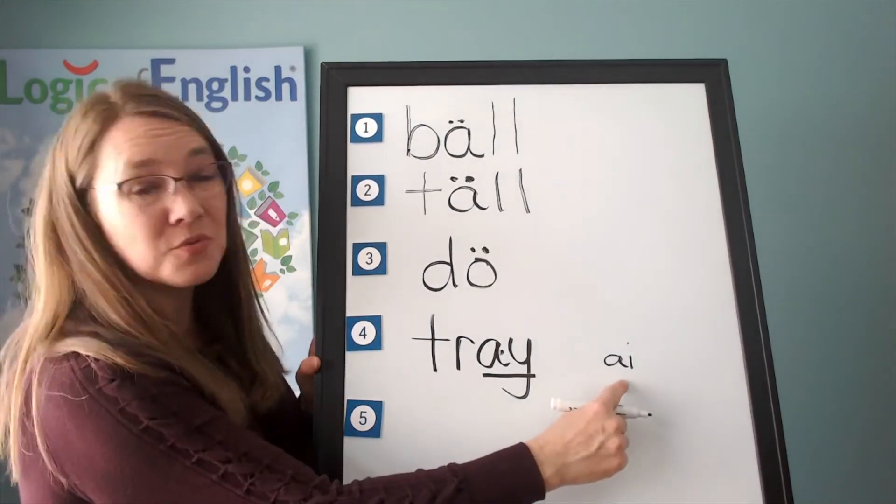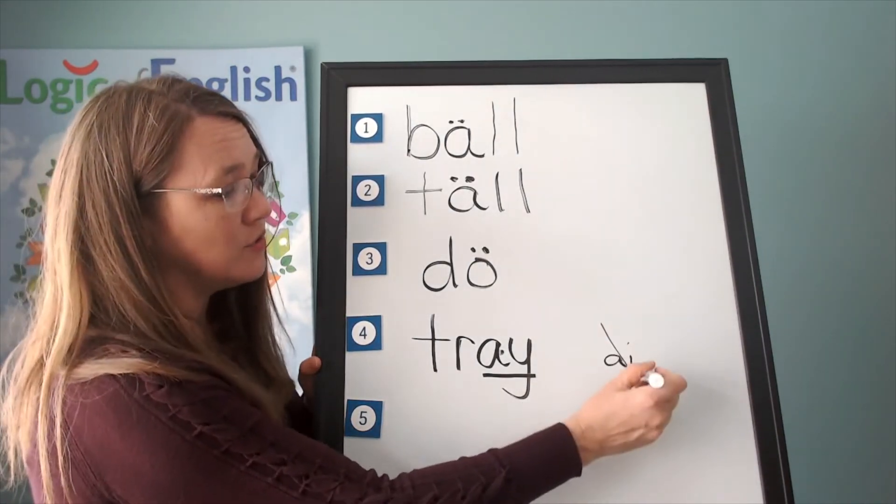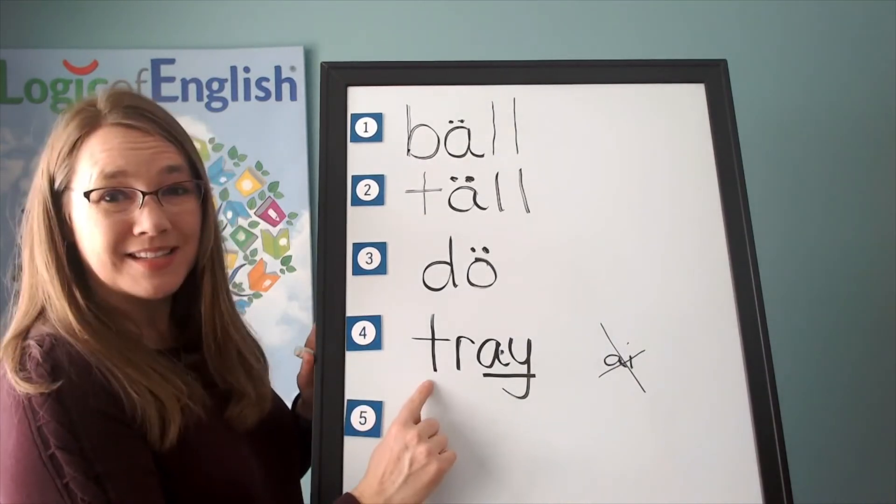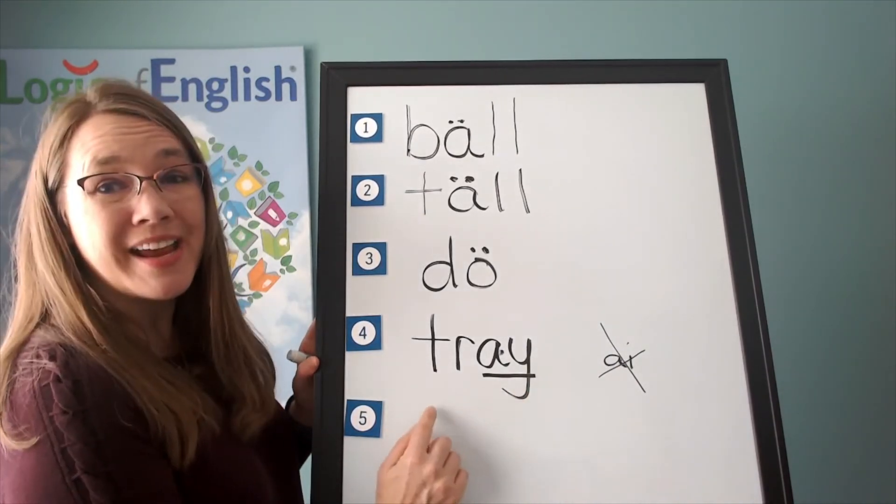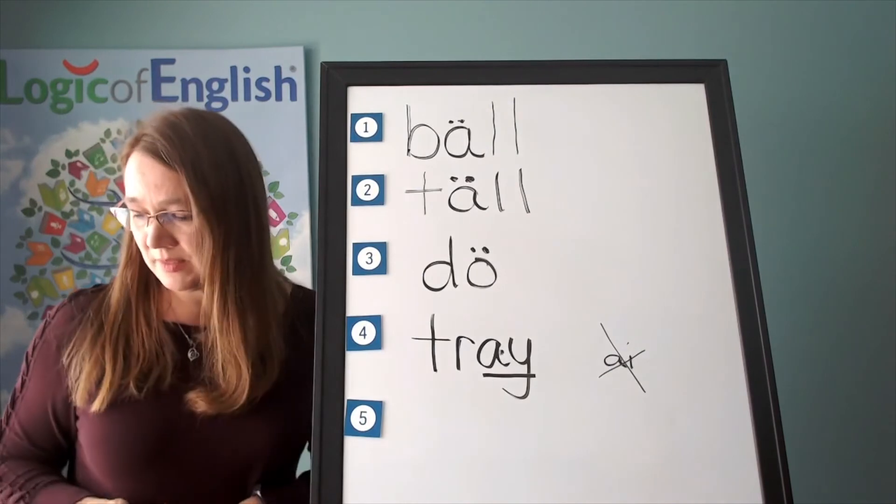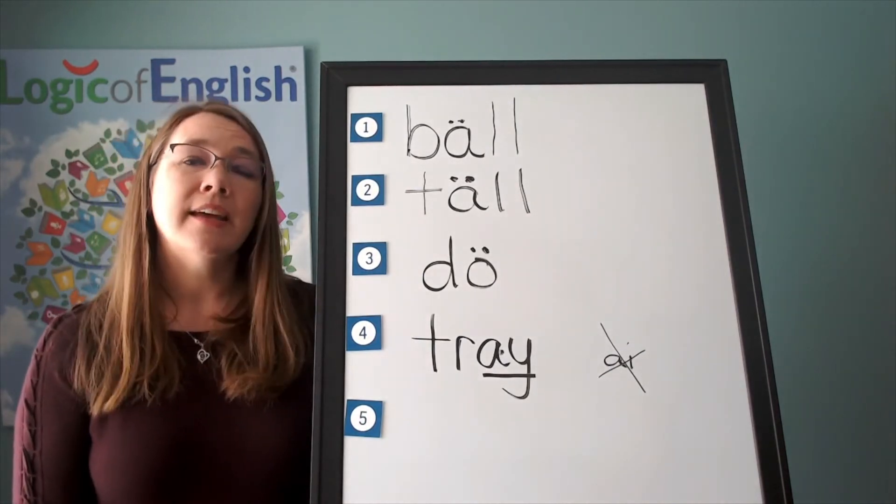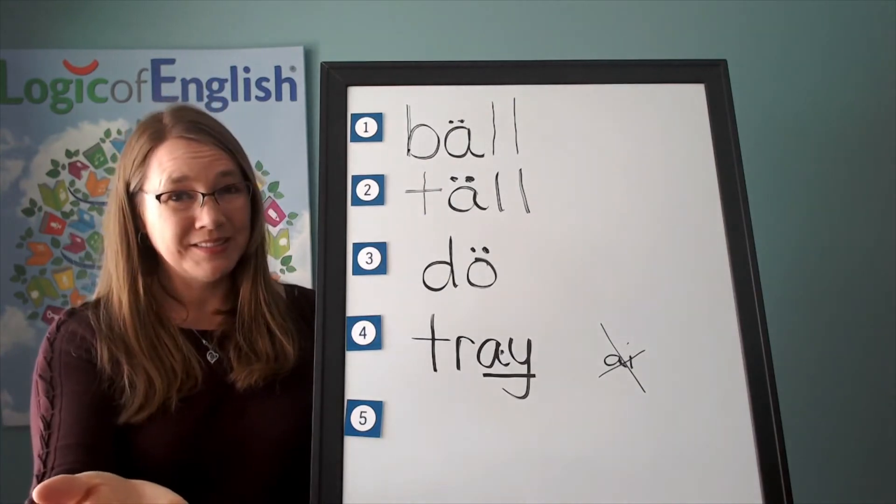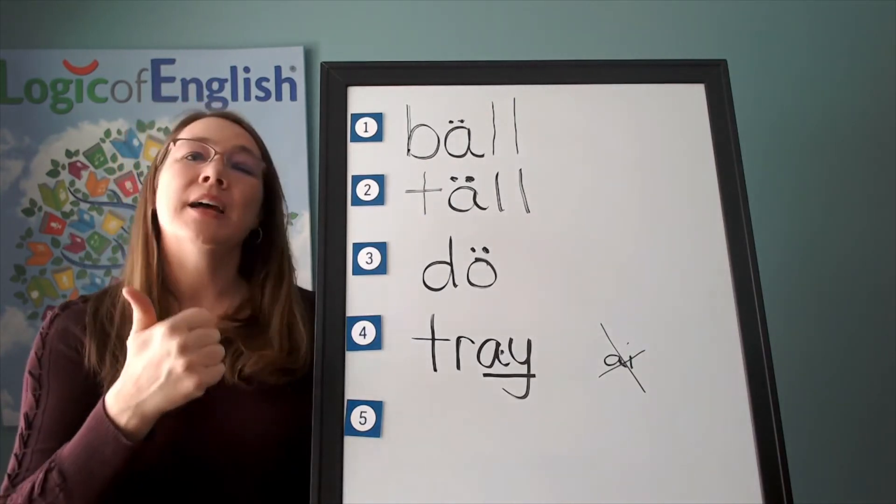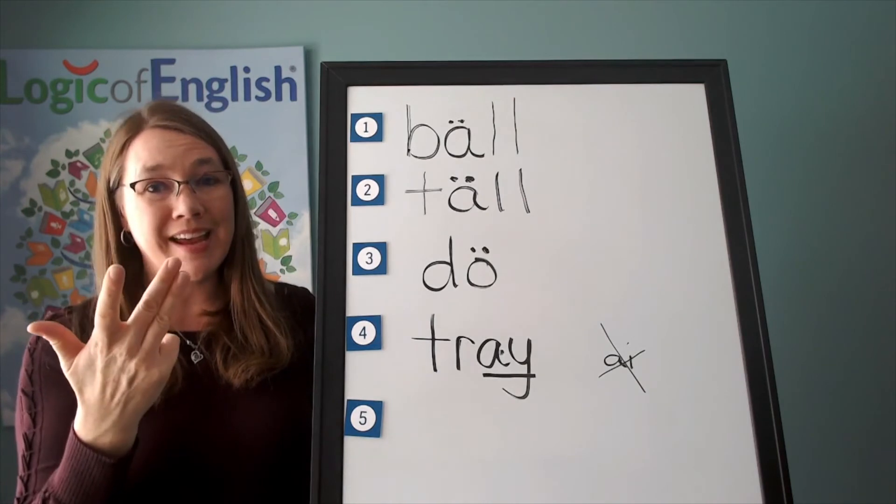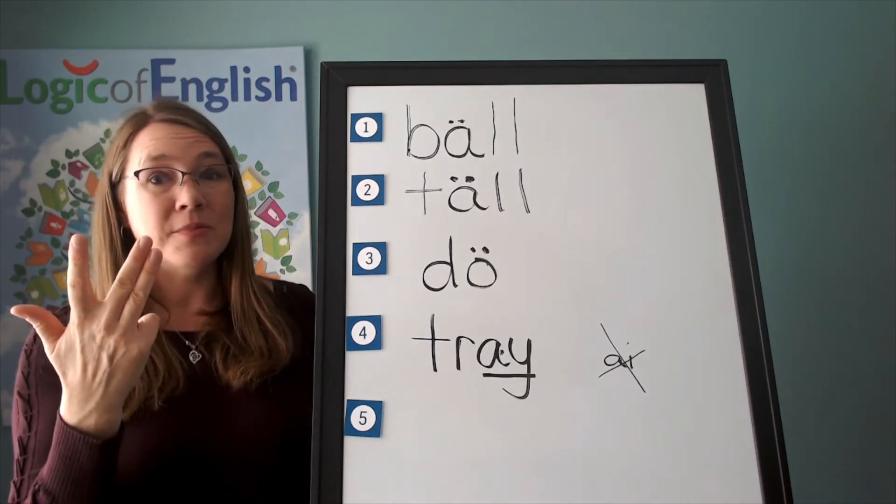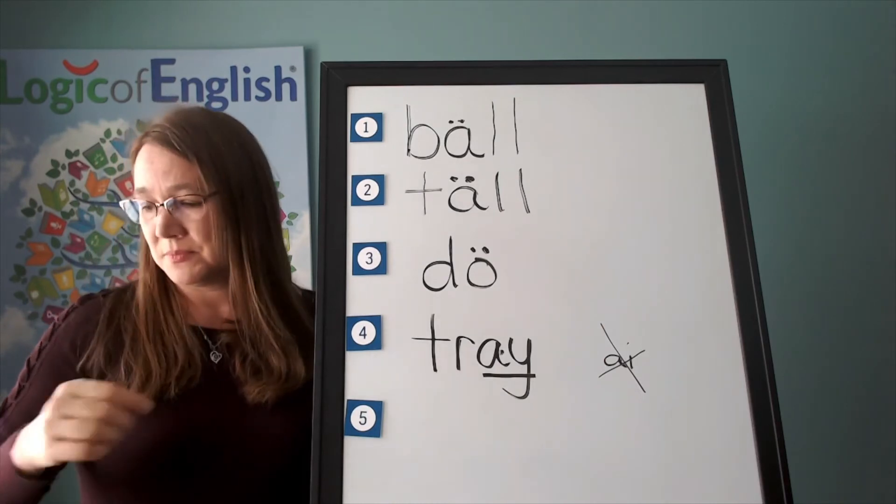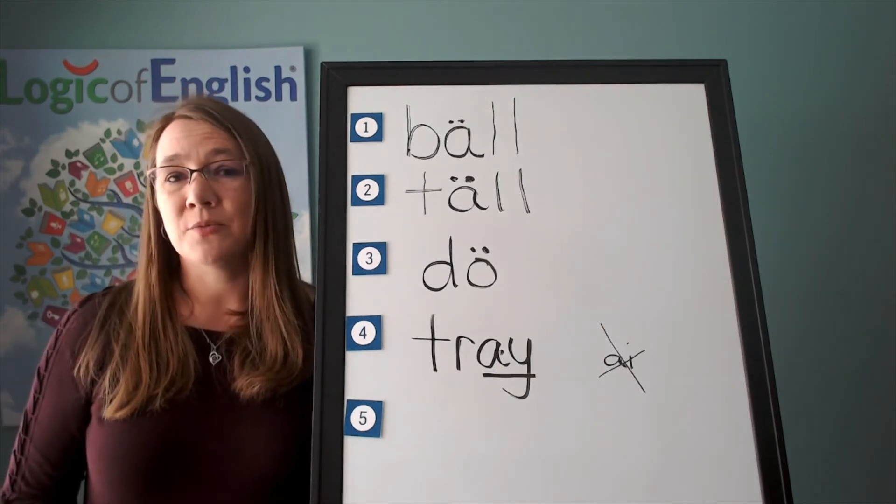Why couldn't we use this phonogram? Because English words do not end in I, U, V, or J. So we couldn't use that one. All right. Let's sound it out. T, er, A. Two letter A that you may not use at the end of English words. Go ahead and write trail.